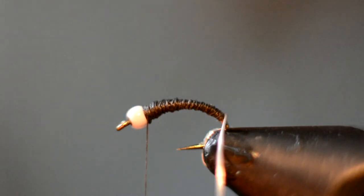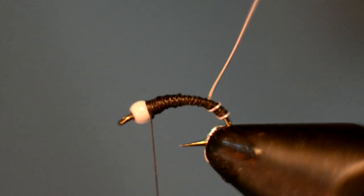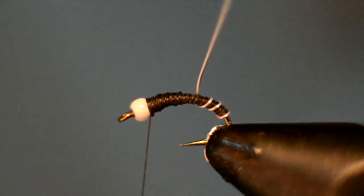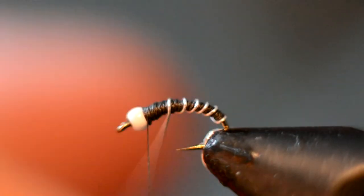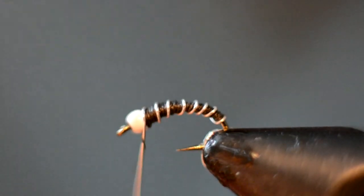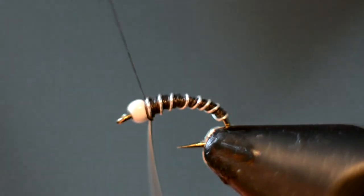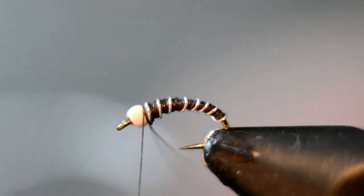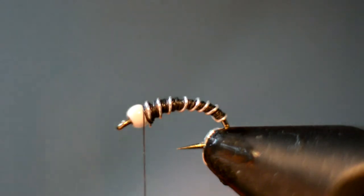Now we're just going to wrap that wire straight up. Do some spiral wraps, some nice even wraps. Alright, I'll secure that and just take a pair of scissors and trim that out.